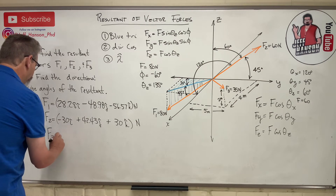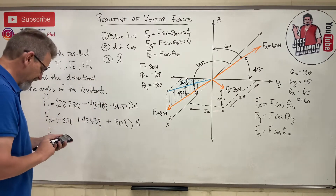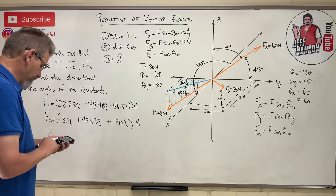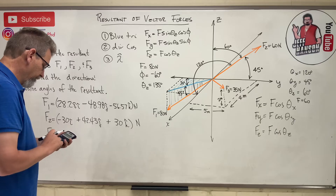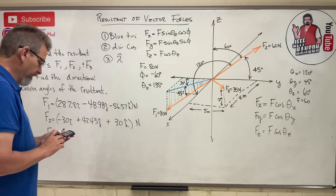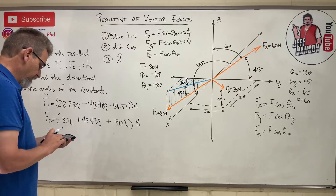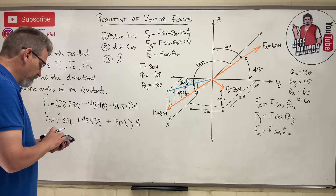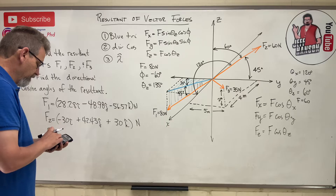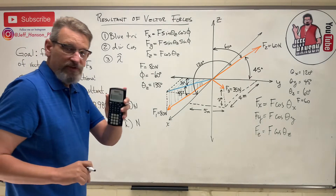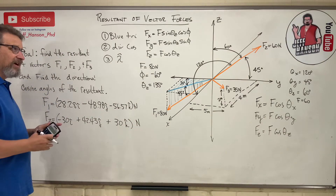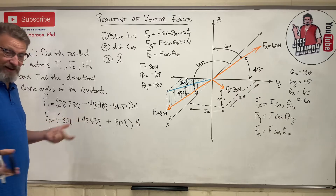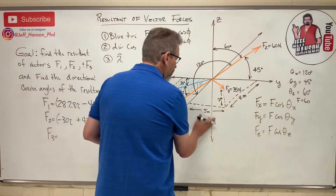Let's check F2: √(30² + 42.43² + 30²) = 60.00 ✓. It's always good to check. If you do that and check the signs, you know you've got it right — there's no way to miss this.